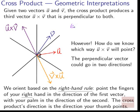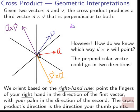To see v cross u, apply the right-hand rule with v first: fingers point in the v direction, palm curls toward u, and the thumb points downward — so v cross u points in the opposite direction from u cross v. Fingers go in the first vector's direction, palm goes toward the second vector, and your thumb gives the direction of the cross product. This comes up all the time in physics and engineering.